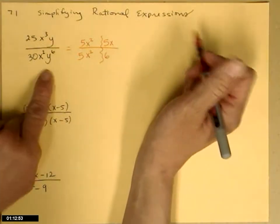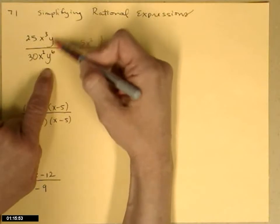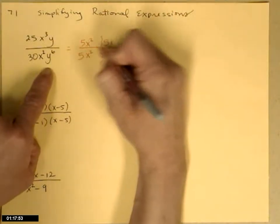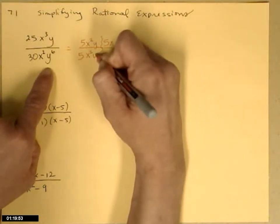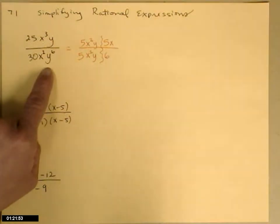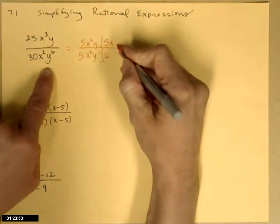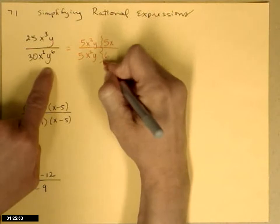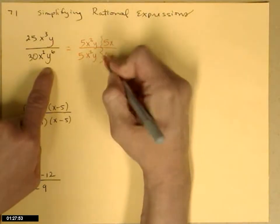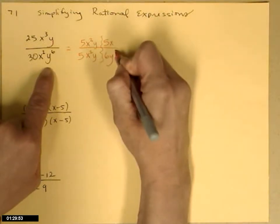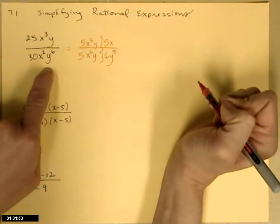And now I'm going to look at the y's. What's the biggest thing that goes into both of those? It has to go into both. So that's just going to be a y to the first. So y to the first goes there. On the top, I don't have anything left. The entire y is over there on the bottom. When I take this y over here, that would leave me a y to the fifth on the right-hand side.